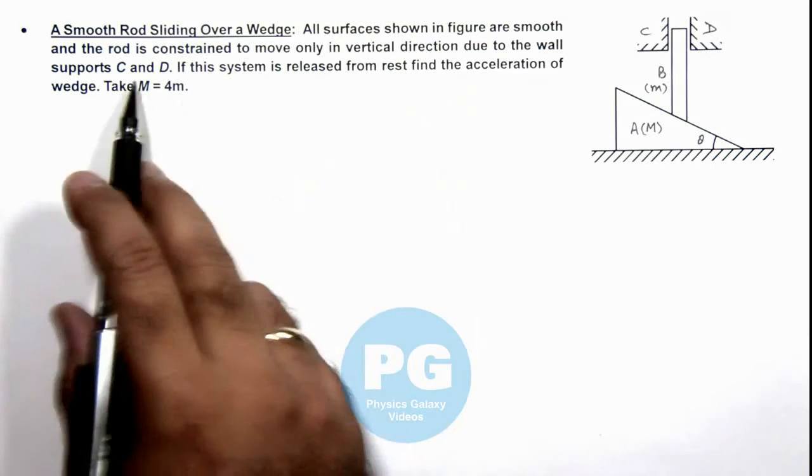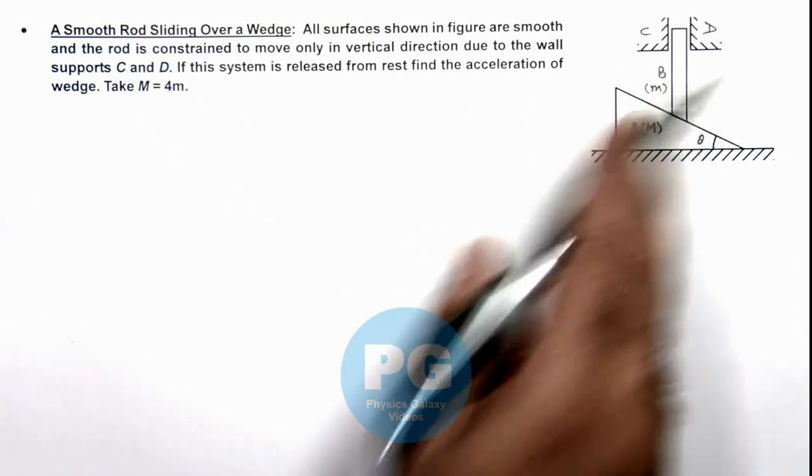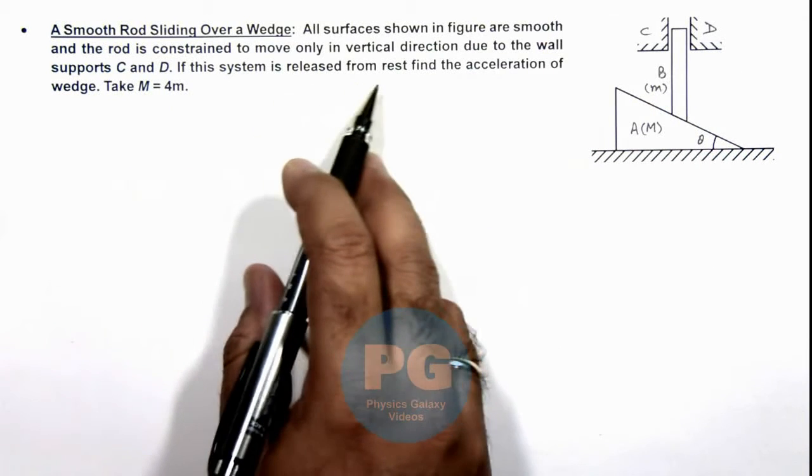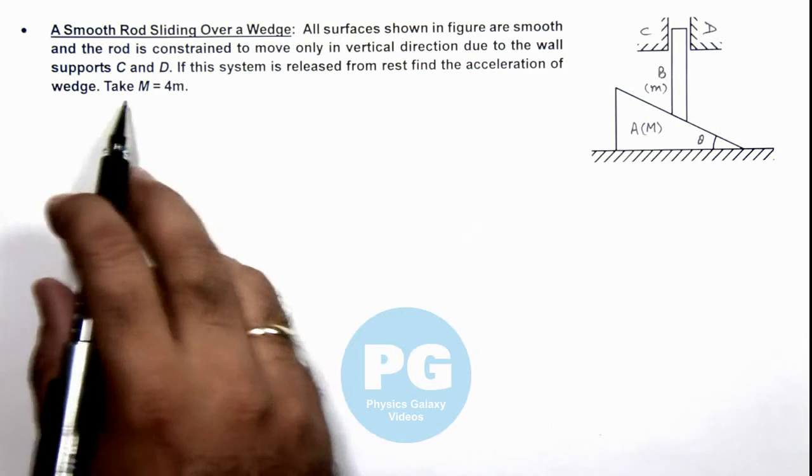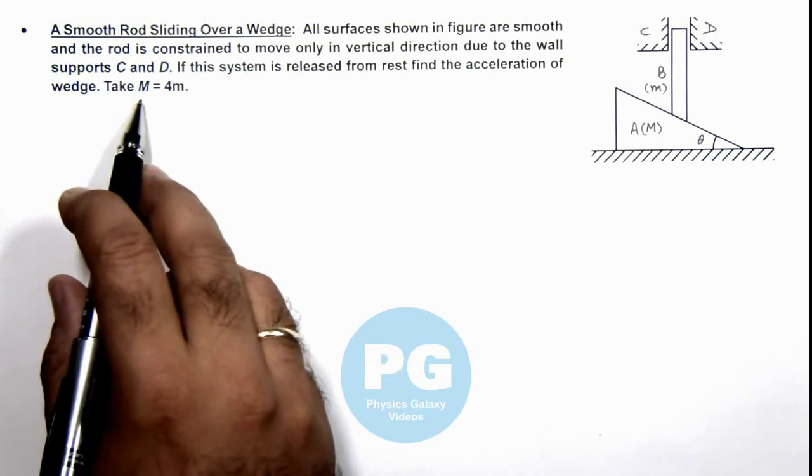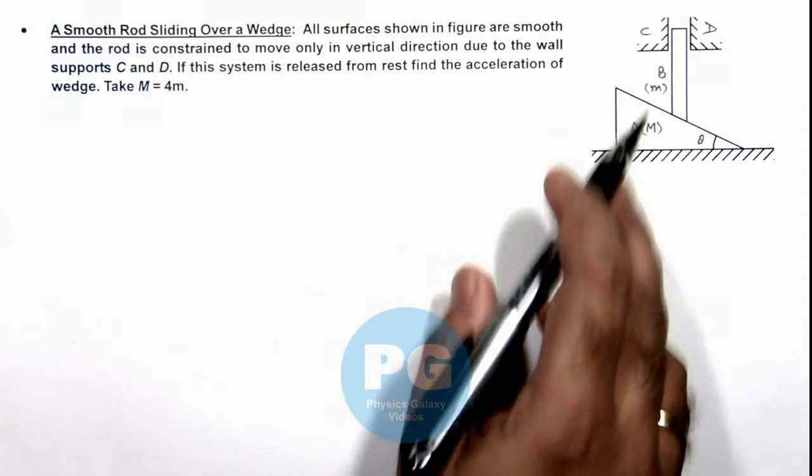Due to the wall support C and D. If the system is released from rest we are required to find the acceleration of the wedge. We are also given that capital M is 4 times small m, the mass of the rod.